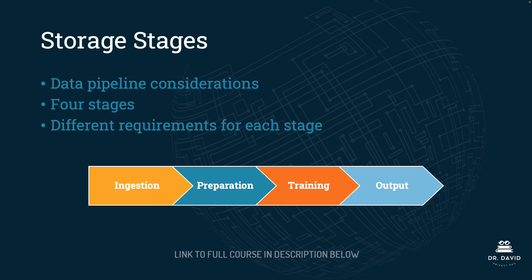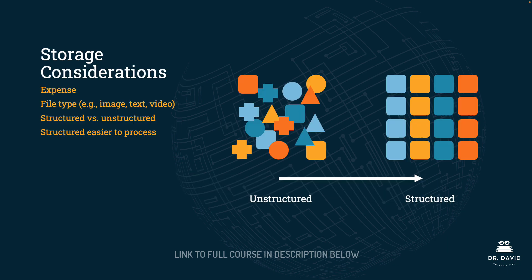There are different considerations for storage. The four you need are: expense, file type — what type of data are you going to have? Is it image? Is it text? Is it video? You also need to consider whether you are working with structured or unstructured data.